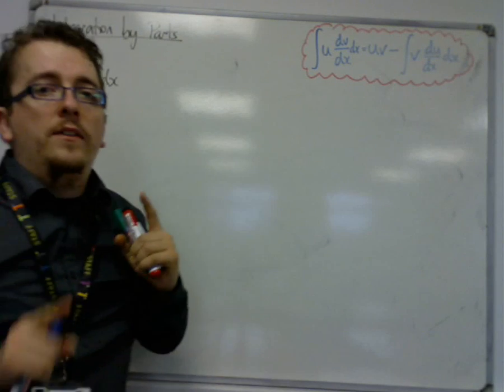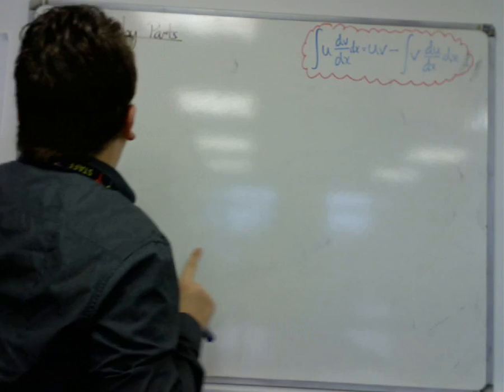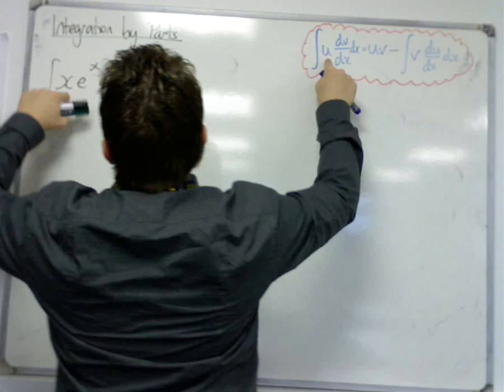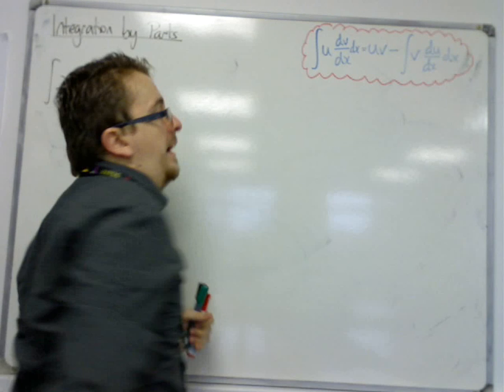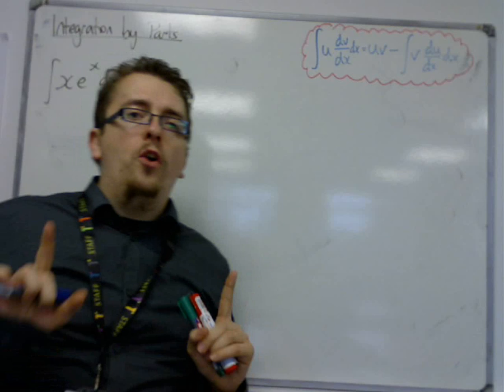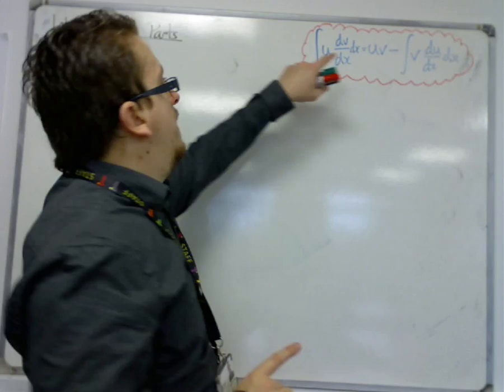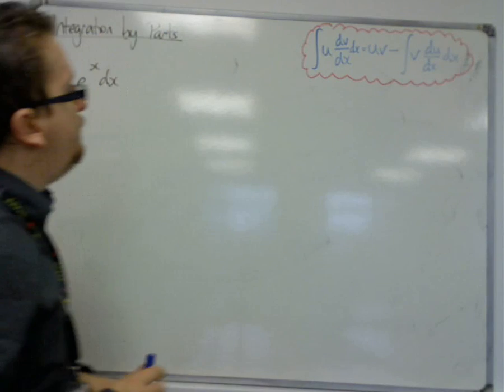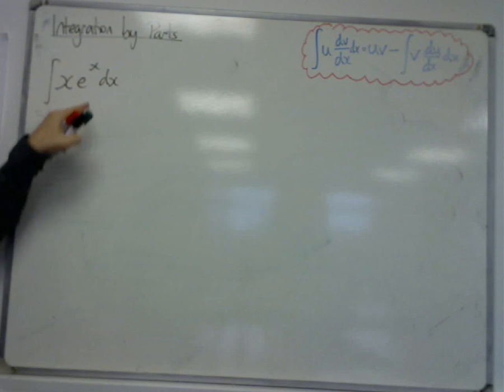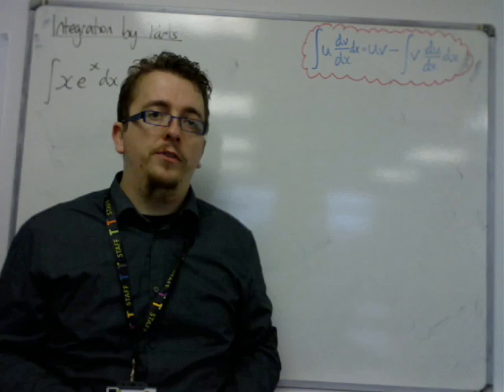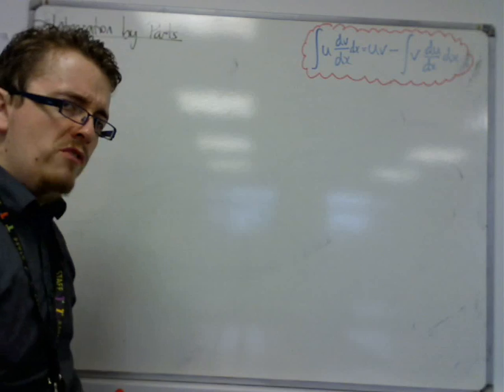Now, this doesn't necessarily mean the order that the x would be the u, and the e^x is the dv/dx. This is not the case. The order here doesn't matter. The u could be the e^x if we wanted to, and it's all about making the correct choice.